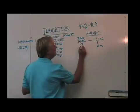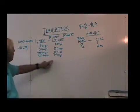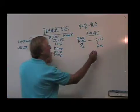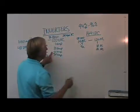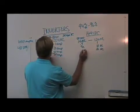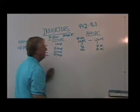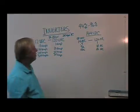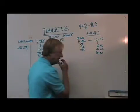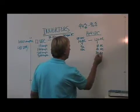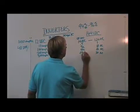If I need 20 amps of AC, then what I need over here is about 18 amps. If I need 30 amps of AC, what I need over here is about 29 amps.